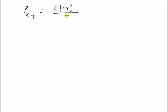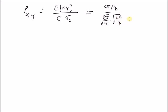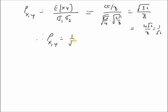Since the means of x and y are both zero, the correlation coefficient ρ(x,y) equals E[xy] divided by σ_x times σ_y. That is cπ/8 divided by √(cπ/4) times √(cπ/8). Canceling the cπ terms in the numerator and denominator, we are left with √(32)/8, which simplifies to 1/√2. Therefore, the correlation between x and y is equal to 1/√2. Thanks for watching.